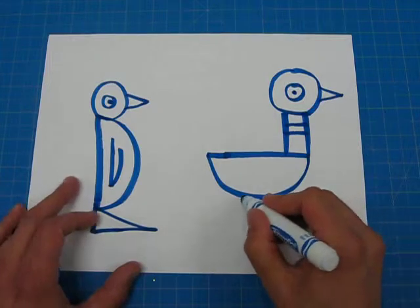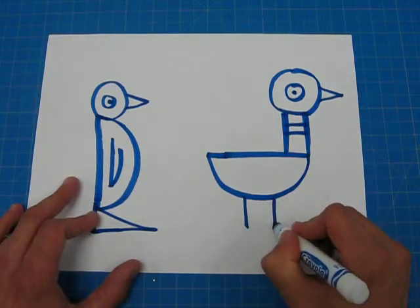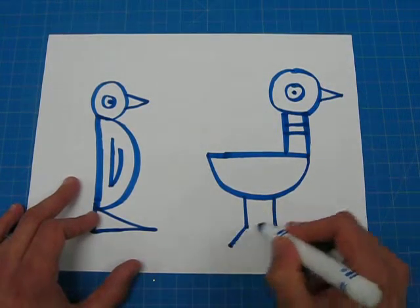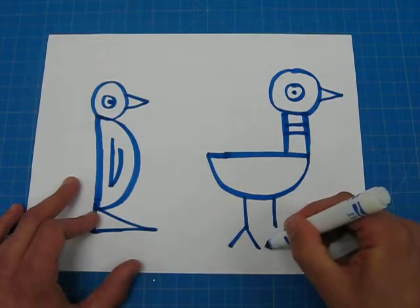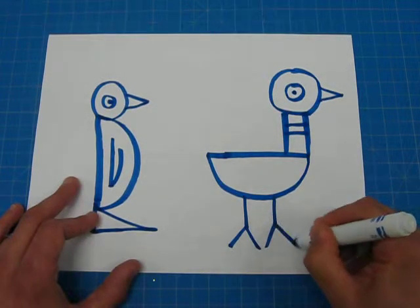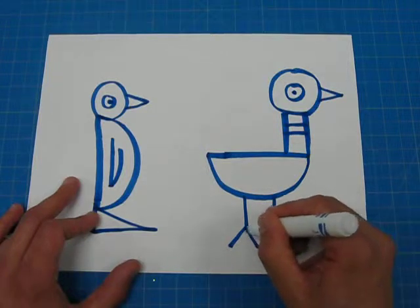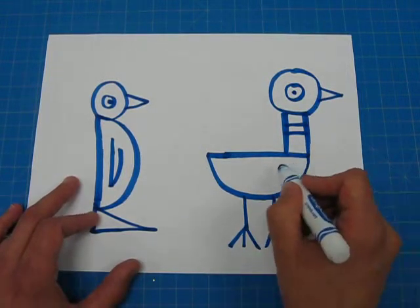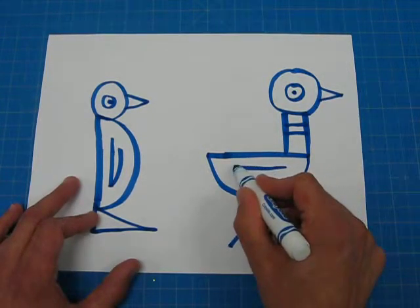Then I'm going to make two lines for his leg. Make a diagonal line. Another diagonal line. Diagonal line. Diagonal line. And one middle toe like that. He needs a wing so we'll go straight across and underneath.